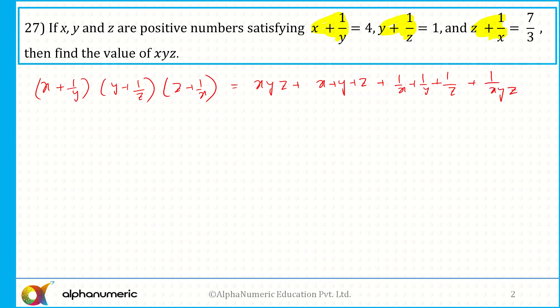You do not need to open the bracket and do it — that's a standard way to solve such type of questions. Very standard method. Now x plus 1 by y is given as 4. So the value of x plus 1 by y equals 4, so you substitute 4. y plus 1 by z is 1, and z plus 1 by x is 7 by 3.